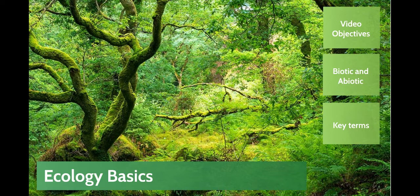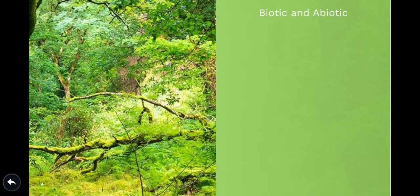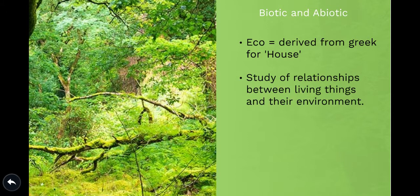Firstly, we'll start off with two really important terms in terms of ecology, and these are the terms biotic and abiotic. What do we actually mean by biotic and abiotic? Well, this kind derives from the word ecology. Ecology derived from the Greek for house, eco meaning house. It's about studying where things live. So what we're interested in is studying the relationships between living things and their environment, and this really drills down into the two really important words within ecology.